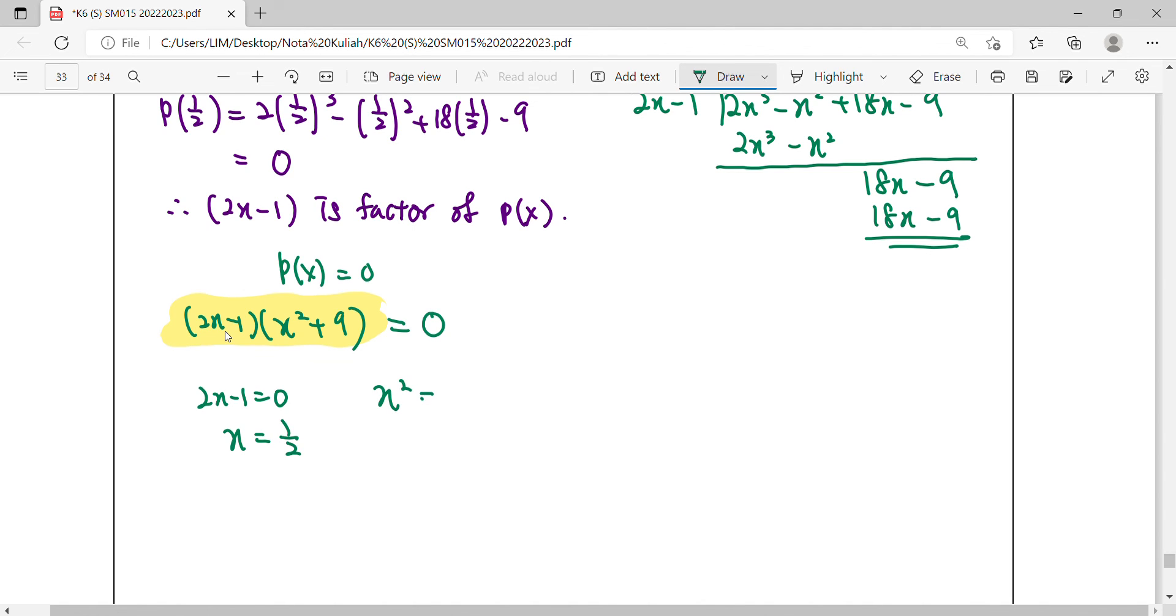When you simplify x squared equals negative 9, the square root of negative 9 will be a complex number, so this will be ignored for this answer. Finally, when solving this, you only can find x equals 1 over 2.